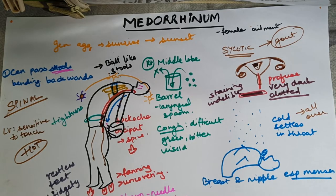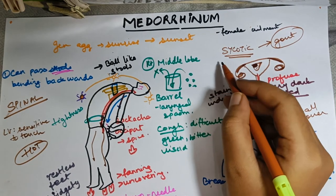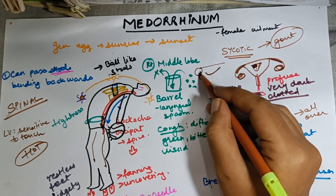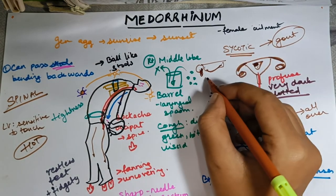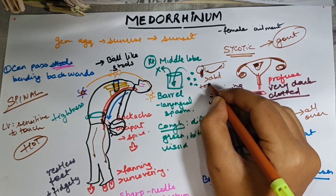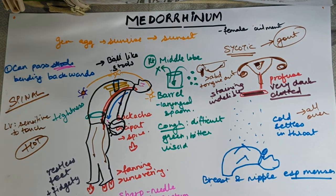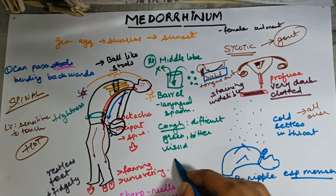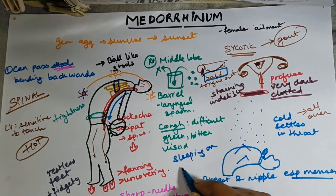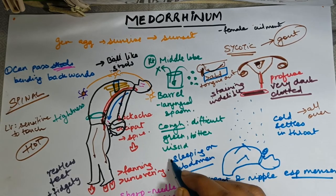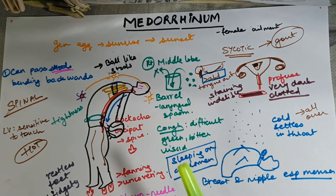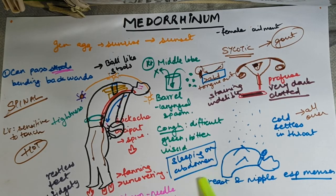There is one more important symptom: the patient feels better lying on the stomach with the tongue out. Breathing is better lying on the abdomen with the tongue out. In many places, lying on the abdomen is taken as an eliminating symptom. So if the patient has a habit of sleeping on the abdomen and Medorinam is in the picture, ask about it — if confirmed, it is a confirmatory symptom for Medorinam.